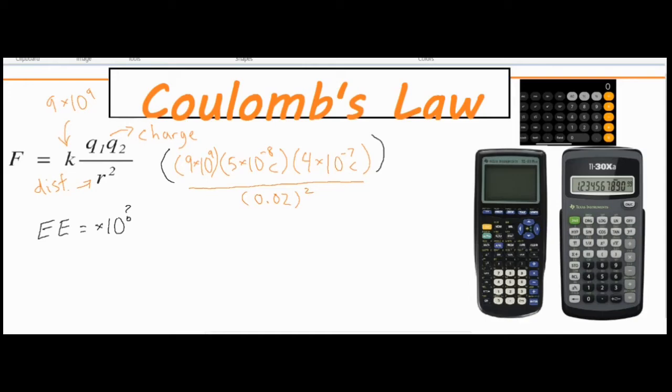So then if you want to type in 9 times 10 to the 9th, you would type in 9, you would hit the double E button, and then you would hit 9 again. You don't have to hit a multiplication symbol, you don't have to raise anything to a power. On the actual calculator itself, it'll show itself as 9, one capital E and 9. So that means 9 times 10 to the 9th power.